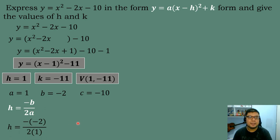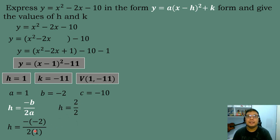Substituting the corresponding values: h = −(−2) / (2 × 1). Simplifying, negative times negative 2 equals positive 2, and 2 times 1 equals 2. Dividing, 2 ÷ 2 = 1. So h = 1.